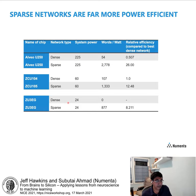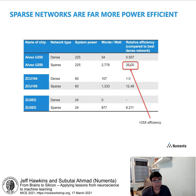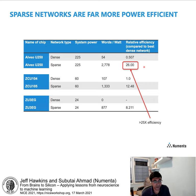Energy efficiency is similarly dramatic. A single sparse network can be more than 25 times as energy efficient as the best dense network, running at about 2,700 words per watt. Overall, high-dimensional sparse networks yield dramatic performance benefits and dramatic energy efficiency gains.